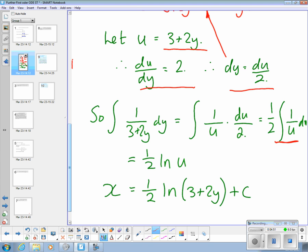1 over u is an entry in the table for which the result is the natural log of u multiplied by the constant. And then the general solution to the problem, we just replace u with what we called u in the first place.